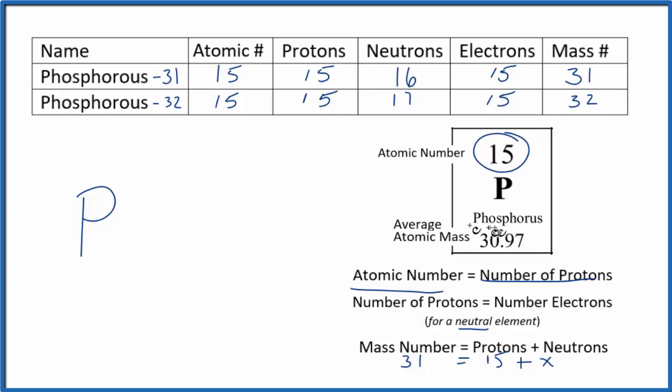We can write the notation for each isotope using nuclear notation. So phosphorus-31, we put a 31 here. And then the atomic number 15, that goes right here. That's phosphorus-31.